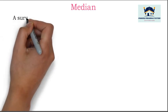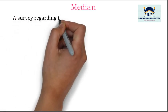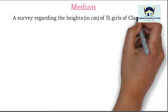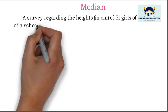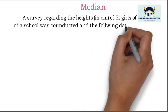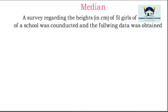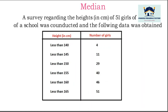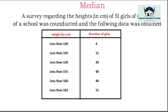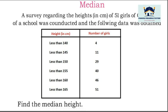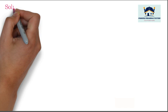Now we will take one question. A survey regarding the heights of 51 girls of class 10 of a school was conducted. The following data was obtained — see the table carefully. Height and number of girls is given. Find the median height. Solution: